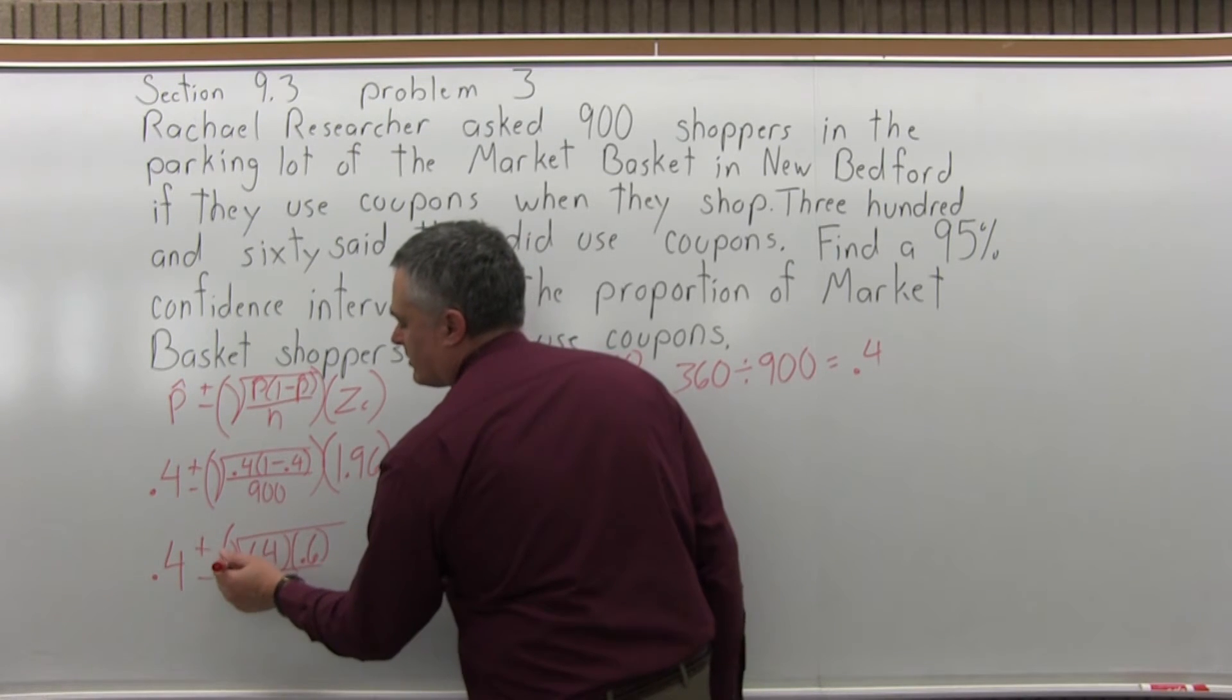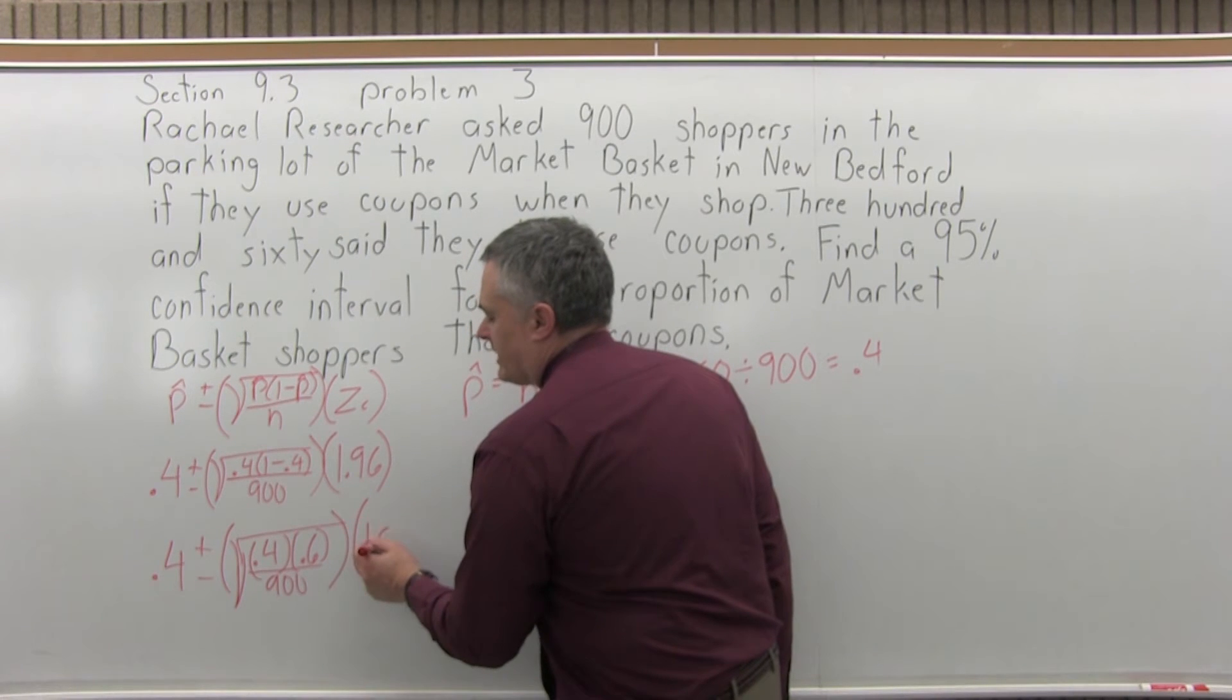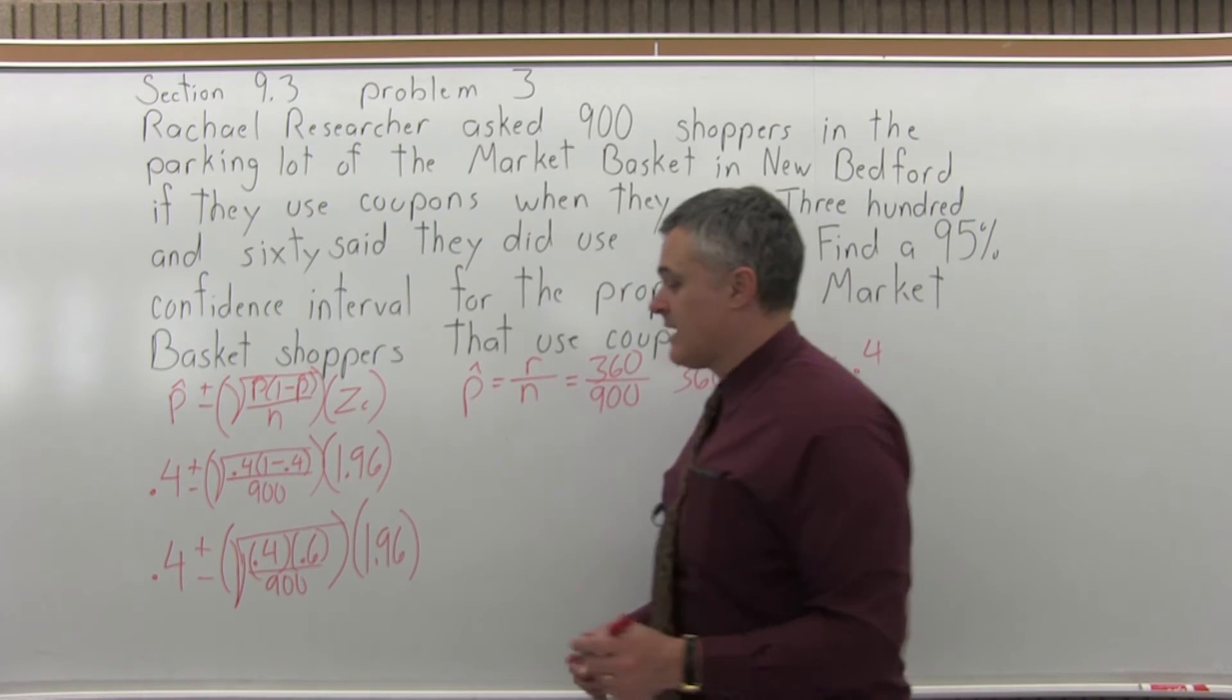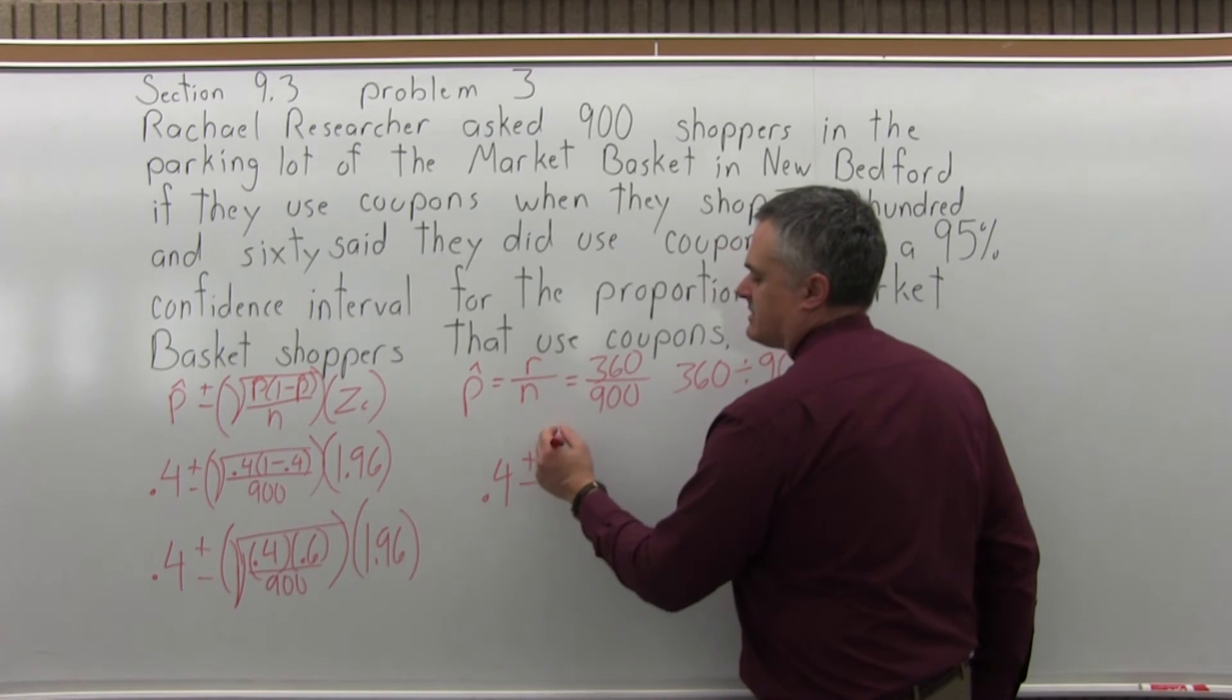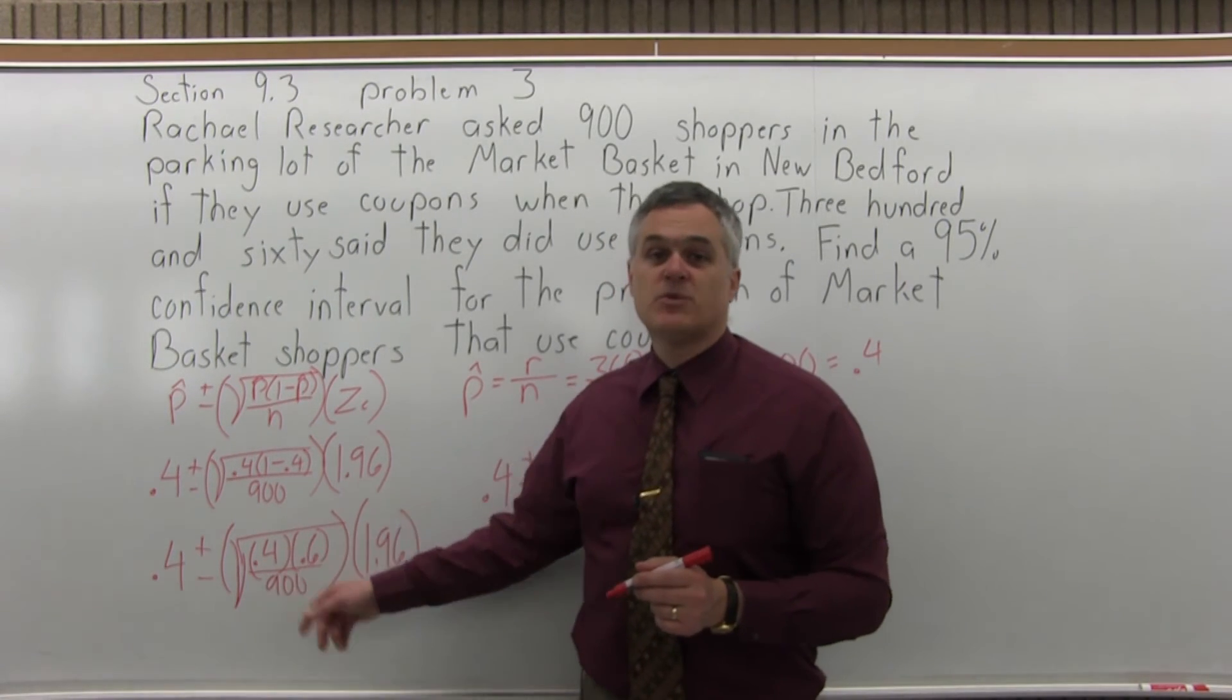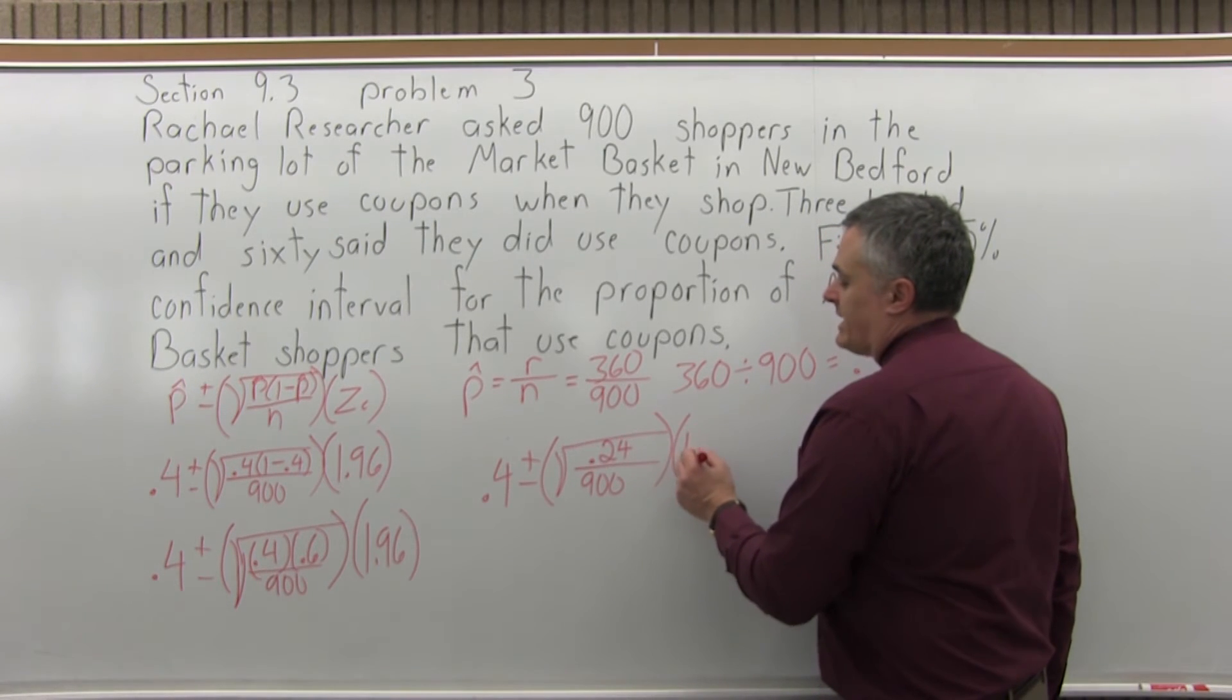Let me make that square root a little bigger because the whole thing is under the square root. So the square root of 0.4 times 0.6, that I can do without a calculator, which is 0.24 over 900 times 1.96.